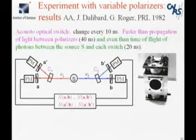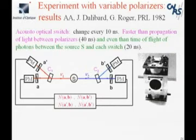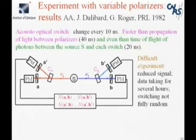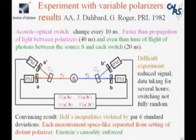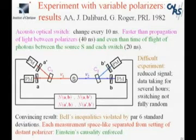How did I do the switch? I built it — using water and a PZT transducer. It is a standing acoustic wave relying on the acousto-optical effect. The switching occurs every 10 nanoseconds, which is faster than needed. It was a difficult experiment: the switches reduce the étendue of the beam, so the signal decreases and you have to accumulate for several hours rather than several minutes. But at the end, we found a violation of Bell's inequality by more than six standard deviations, which is convincing enough. In this experiment, for the first time, each measurement was separated from the other by a relativistic — space-like — separation. Einstein causality was enforced.